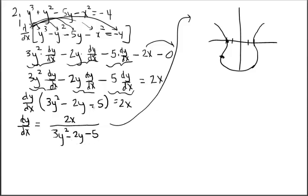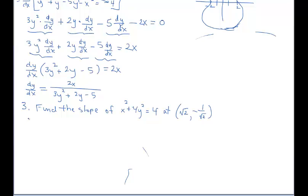We're moving on to example 3. We're going to find the slope of x² + 4y² = 4 at the point (√2, −1/√2). This equation is actually an ellipse with vertices at negative 2 and 2. Visually, the point (√2, −1/√2) is in the lower right portion of the ellipse, where the graph is increasing back toward the x-axis, suggesting the slope should be a positive number.